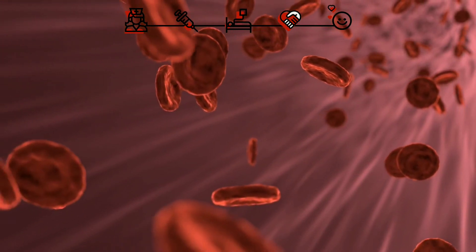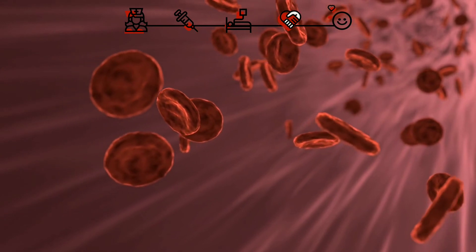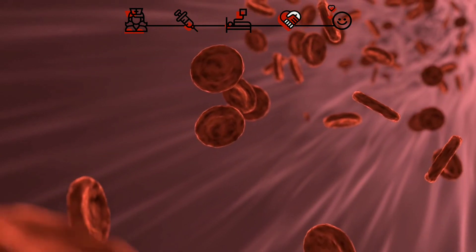AB group is called the universal recipient, whereas O is the universal donor.